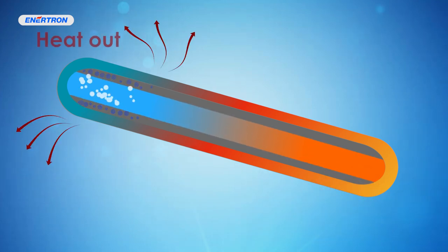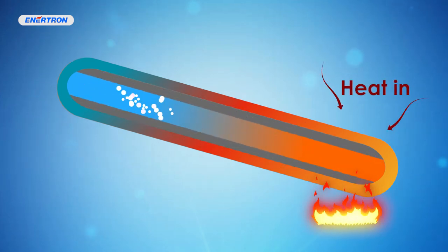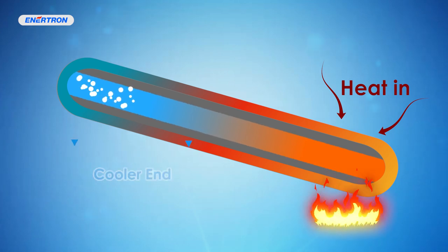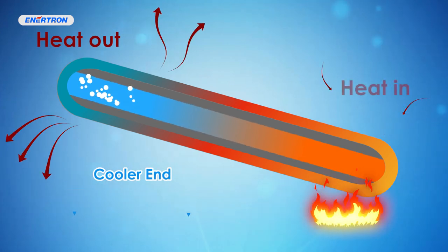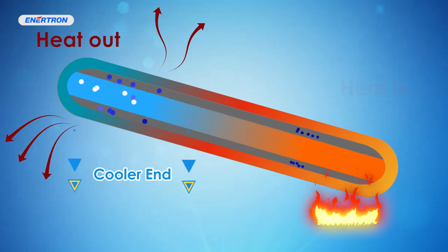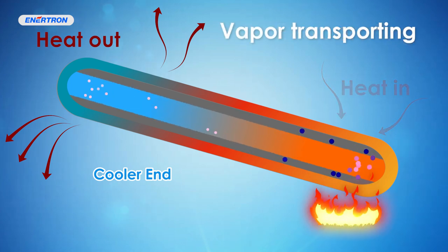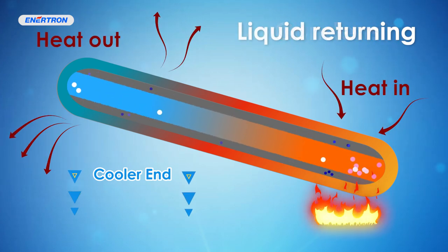The condensed liquid then travels back to the origin end of the pipe via the wick structure. Overall, a heat pipe cycle has four phases with each of these phases playing a role in the heat pipe's ability to transport heat from one end of the pipe to the other. The four phases are evaporating, vapor transporting, condensing, and liquid returning.